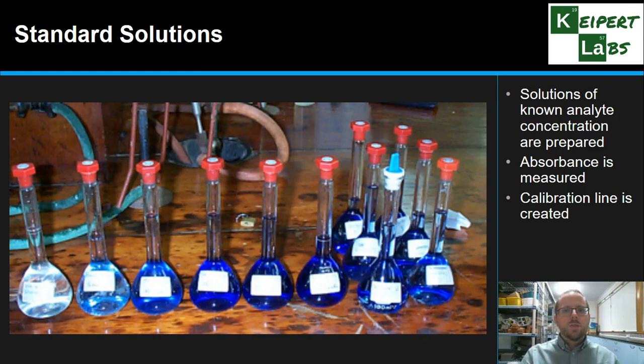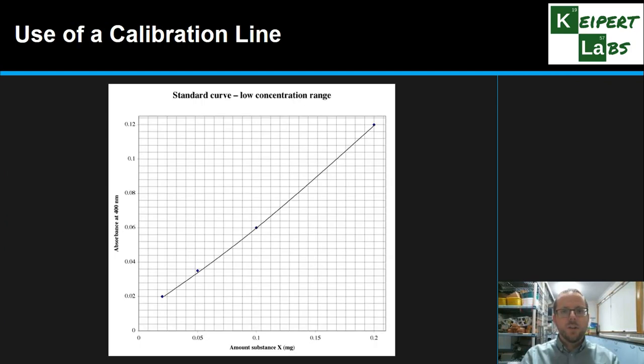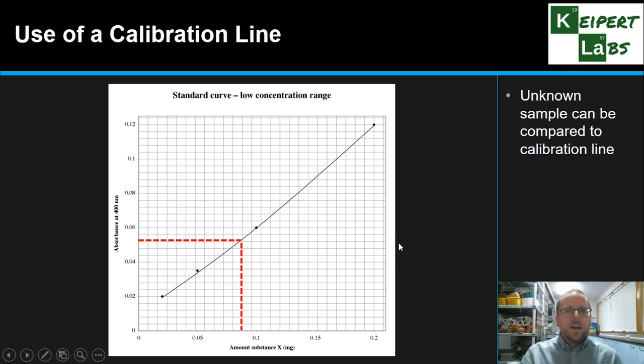And so then what it allows us to do, with the more accurate, the more solutions we prepare, it allows us to prepare a calibration line. So we can actually measure the absorbance of these solutions of different concentration. We can plot a straight line of best fit through our data. And then what we can do is we can use that calibration line. So say we test our unknown substance and we detect its absorbance, and then we can trace it across to our line. We can trace it down to the actual concentration in the units that we've measured the others in, and then that gives us our value. So the unknown sample can be compared to our calibration line that we've set up and now we have a valid and accurate way to determine the concentration of an unknown substance.